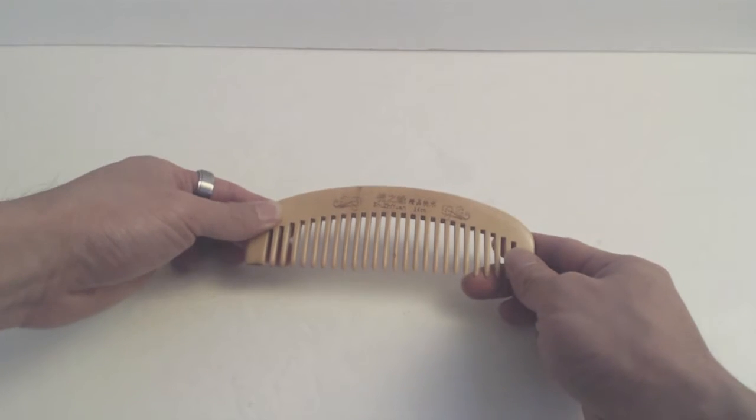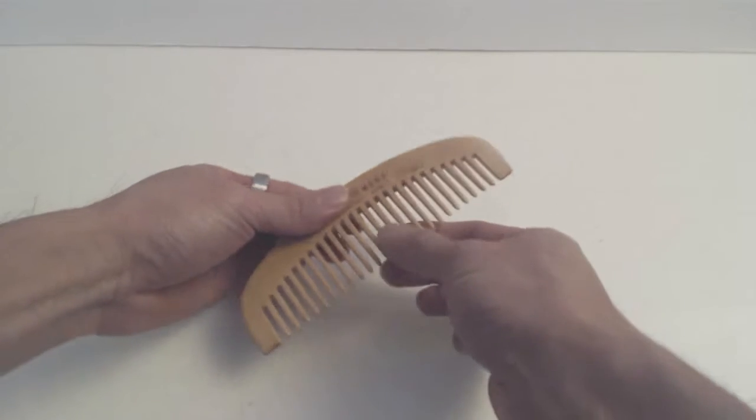The teeth on the comb are pretty thick, so they should run through your hair pretty easily unless you've got a lot of tangles.